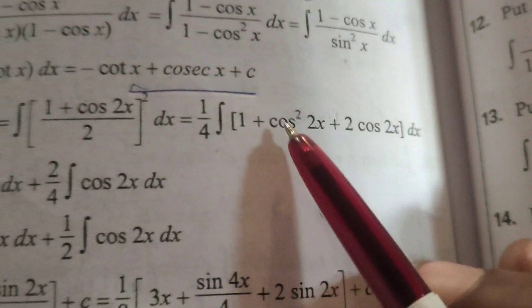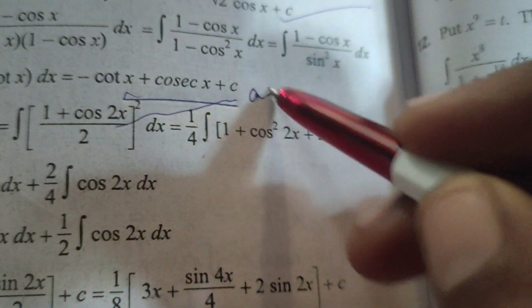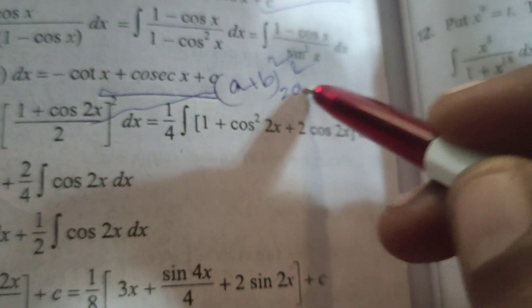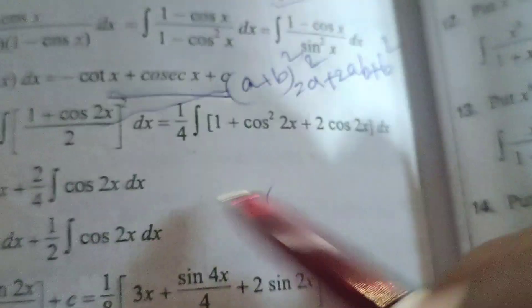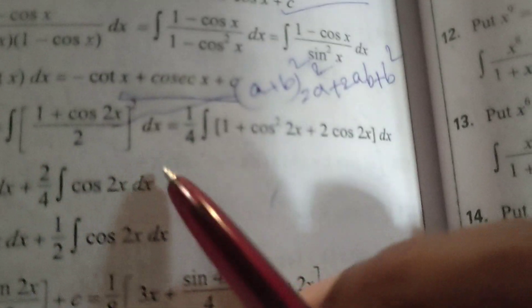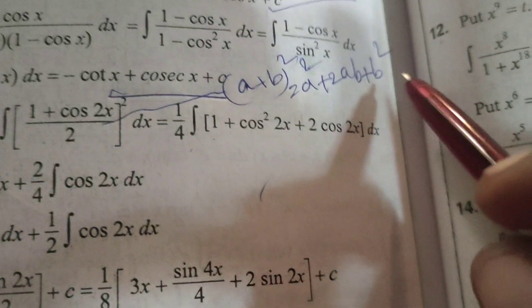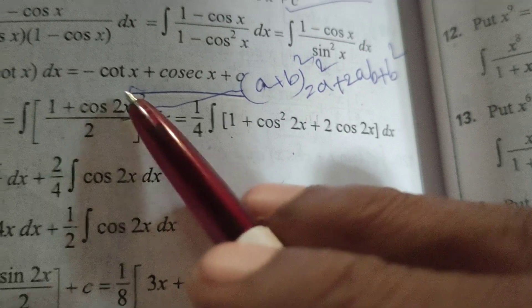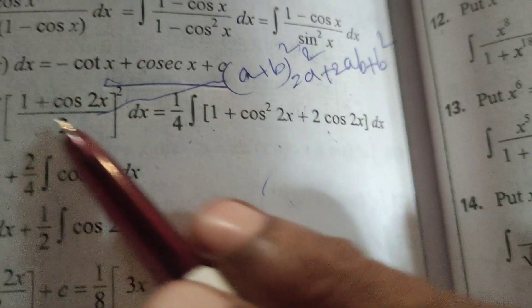Using the formula a plus b whole squared, which means a squared plus 2ab plus b squared. Here a means 1, so a squared means 1 plus b squared means cos squared 2x plus 2ab. 2 into 1 into cos 2x equals 2 cos 2x dx.